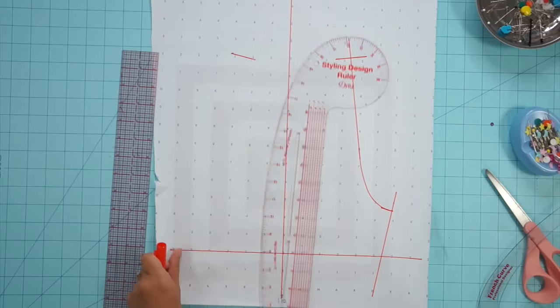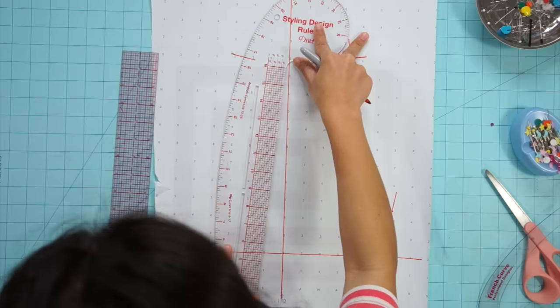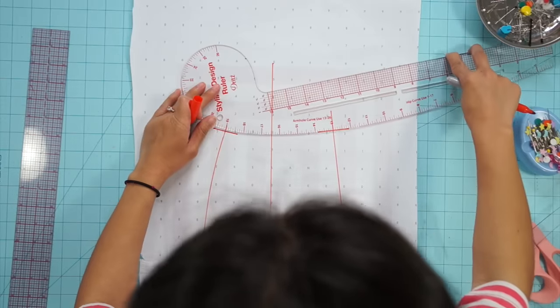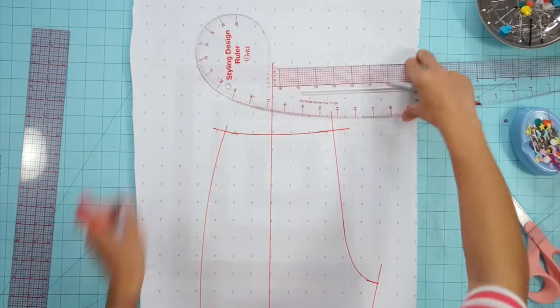For the side seams of the shorts the hip curve ruler is perfect to use. Sometimes the rulers aren't going to line up perfectly with your markings which is fine. All you have to do is move it over slightly and make it work. The hip curve is also great for marking your waistline.